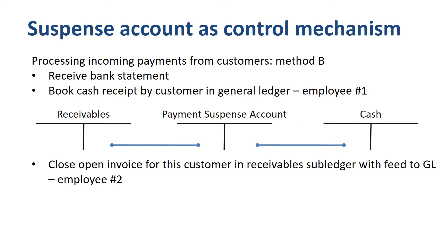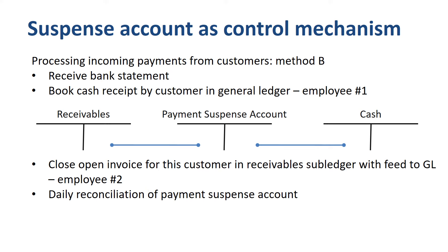If all goes well, the payment suspense account has a balance of zero at the end of the day. If any mistake is made, you have your employees — and possibly their manager — reconcile the entries until they have found and corrected the error. With today's accounting systems, you could use subledger codes to simplify this process. This method incorporates the 4Is principle, or 2-person rule, which means that certain activities must be approved or recorded by at least 2 people.